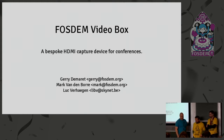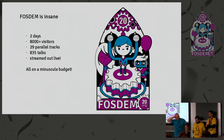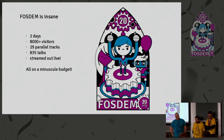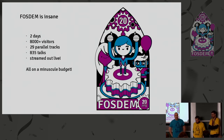FOSDEM is insane. Nobody does what these guys are doing. The core organizers have no time, don't sleep much in the weeks before the event, and you can't reach them on the days themselves. We're now at 29 parallel tracks. We are probably three times as large as the next largest event on the planet. Of the 835 talks accepted in Pentabarf there were about 1800 proposals, so more than half got refused. We're the only people streaming 29 live streams simultaneously — nobody does that.